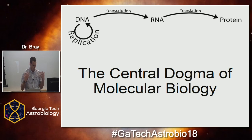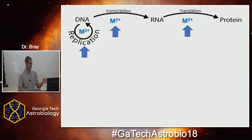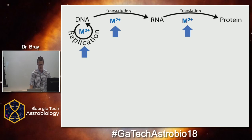Why the cation content of the environment matters is that all these central dogma steps are totally dependent on divalent cations. In the first two steps they're required for structuring the nucleic acid in the binding site and for catalytic function in facilitating the growing nascent nucleic acid, and then there's a whole slew of structural and functional roles in translation. What biochemists think of now as mediating these functions is magnesium.